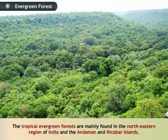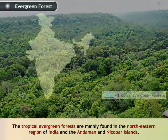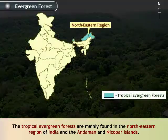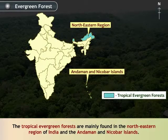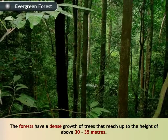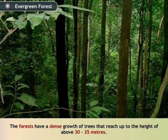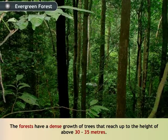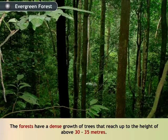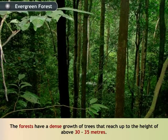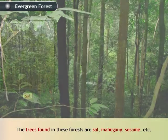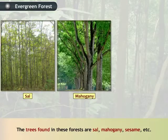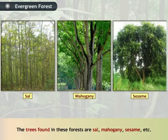The tropical evergreen forests are mainly found in the north-eastern region of India and the Andaman and Nicobar Islands. These forests have a dense growth of trees that reach up to a height of above 30 to 35 meters. The trees found in these forests are Sal, Mahogany and Sesame.